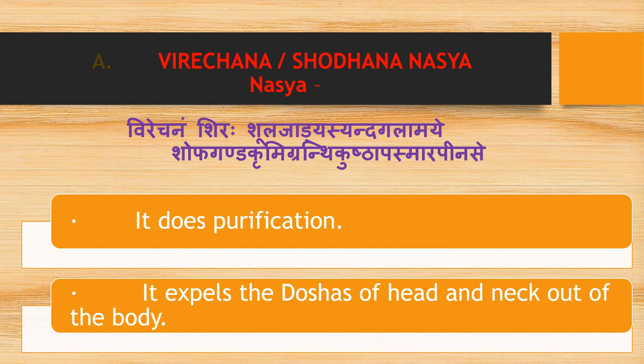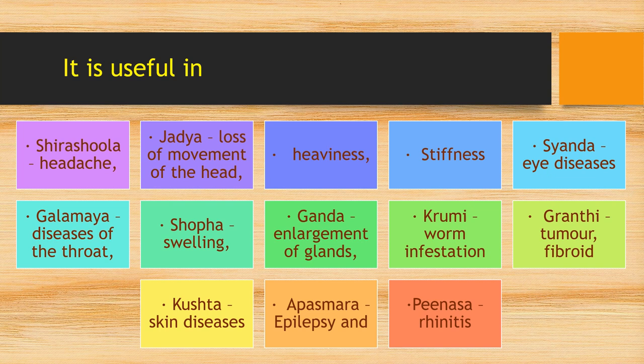Virajanam Nasya performs purification — it expels the doshas of the head and neck out of the body. It is useful in Shira Shula (headache), Jadya (loss of movement of the head), heaviness, stiffness, Syanda (eye diseases), and Galamaya (diseases of the throat).